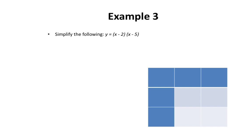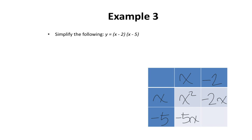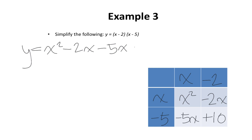In our third example, we want to simplify: y equals x minus 2 multiplied by x minus 5. We're going to begin by writing these binomials into the chart — x and negative 2, then x and negative 5. x times x is x squared. x multiplied by negative 2 is negative 2x. Negative 5 multiplied by x is negative 5x. And negative 5 multiplied by negative 2 is positive 10. I'm going to rewrite these terms: x squared minus 2x minus 5x plus 10.